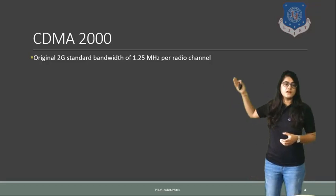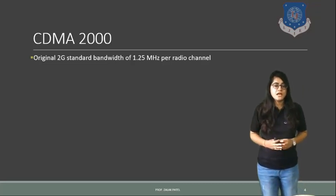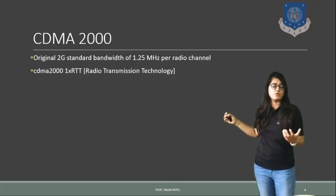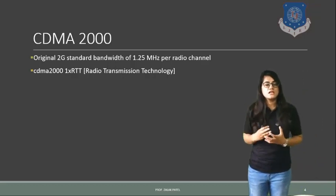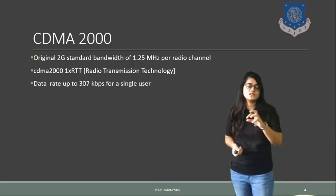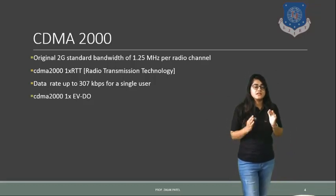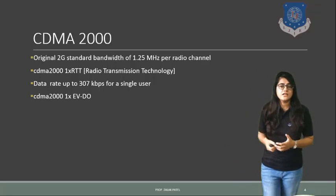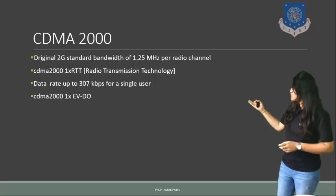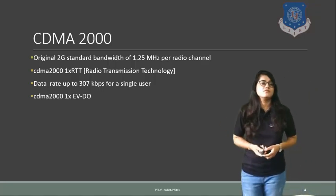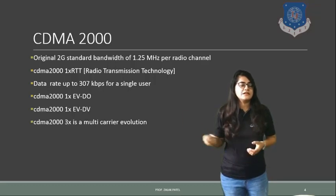The CDMA 2000 standard is the original 2G standard with a bandwidth of 1.25 MHz per channel. CDMA 2000 provides Radio Transmission Technology — RTT. We can use 1x RTT, 2x RTT, and 3x RTT. For 1x RTT, 1.25 MHz of channel bandwidth is provided; for 3x RTT, three channels of 1.25 MHz are provided. It also provides the EVDO — Evolution Data Only — and EVDV — Evolution for Data and Voice — standards.